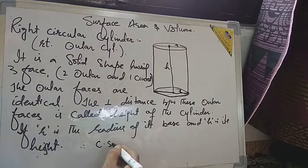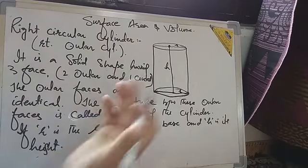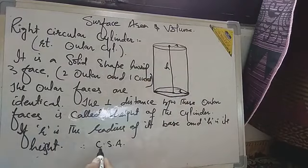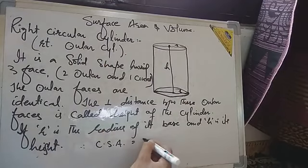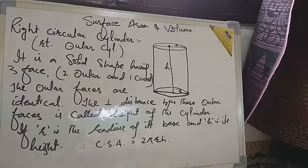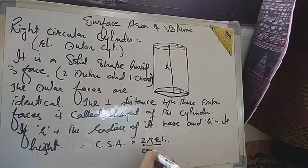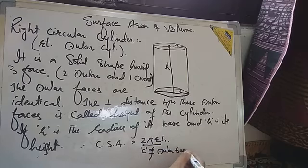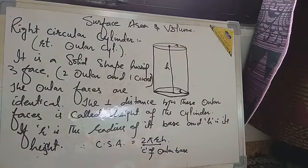Its curved surface area — here we say lateral surface area as curved surface area, because the side face of this cylinder is in the shape of a curve. The curved surface area of this cylinder is equal to 2πRH, where 2πR is the circumference of the circular base. If the circumference of the circular base is multiplied by its height, we get the curved surface area of the cylinder.